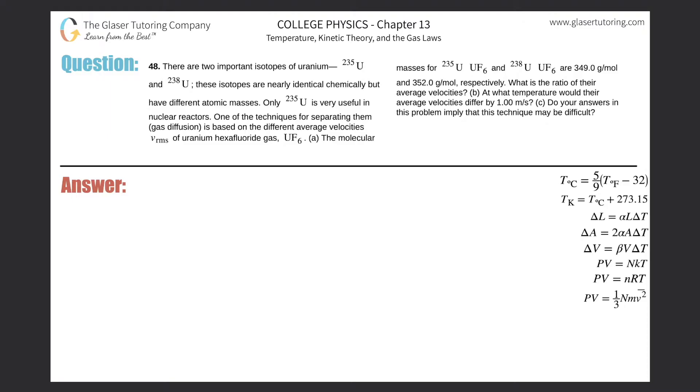Number 48. There are two important isotopes of uranium, U-235 and U-238. These isotopes are nearly identical chemically but have different atomic masses. Only U-235 is useful in nuclear reactors. One of the techniques for separating them, gas diffusion, is based on the different average velocities or root mean square velocities of uranium hexafluoride gas, UF6.